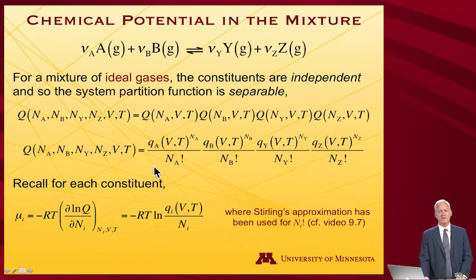And for each of these constituents, we've worked out previously that the chemical potential is minus RT partial the log of the partition function, partial the number, which is minus RT, so I'll just make the substitution, Q sub I, the molecular partition function, divided by N sub I.